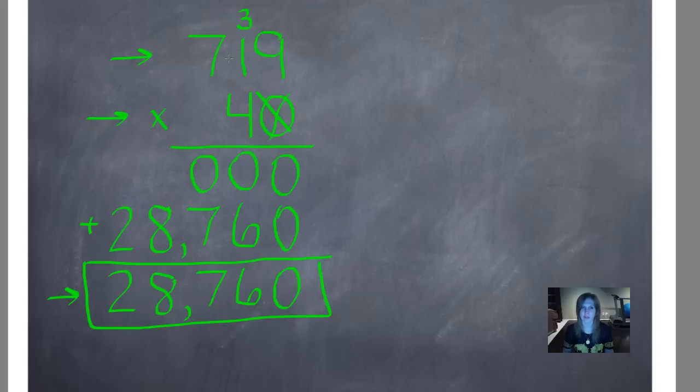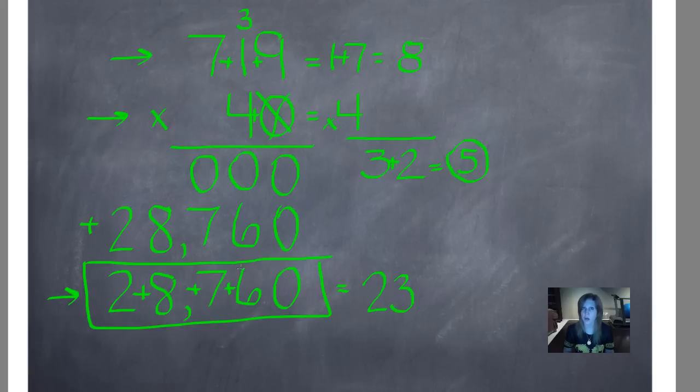By now, you should be getting the hang of digital root checking. I'll use the commutative property this time. 9 plus 7 is 16 plus 1 is 17. 1 plus 7 is 8. 4 plus 0 is 4. 4 times 8 is 32, but we can't have a 2-digit number so 3 plus 2 is 5. 5 is our magic number. Now we'll check our answer. This time, I'll use touchpoint to work them all out. 8, 9, 10, 11, 12, 13, 14, 15, 16, 17, 18, 19, 20, 21, 22, 23. Remember, with touchpoint, I don't actually have to draw the dots, but you do have a chart showing you where they are if you forget. 2 plus 3 is 5. And 5 is our magic number. And there's our power bar to prove it.